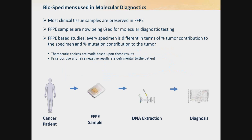For many years, surgical oncologists have taken samples from cancer patients and preserved them in FFPE, which stands for formalin-fixed and paraffin-embedded. These FFPE samples are now being used for molecular diagnostic testing, which means that we're looking for biomarkers in them to determine response to targeted therapies.